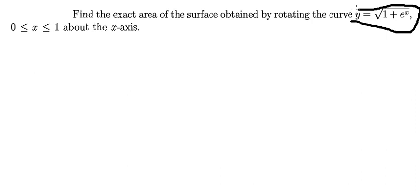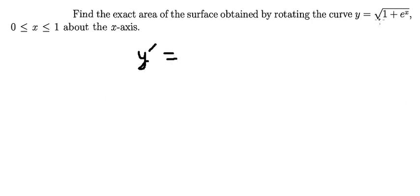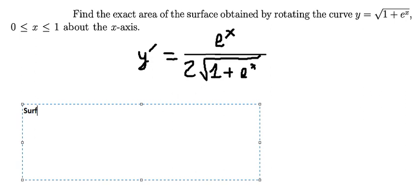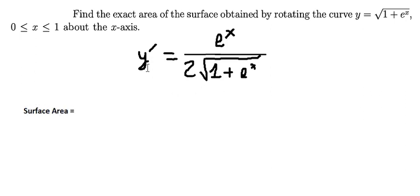The first thing we need to find is the first derivative of y. Because we have a square root, we need to use the chain rule. The function inside the square root is 1 plus e to the power of x, so we take the first derivative inside and we get e to the power of x.